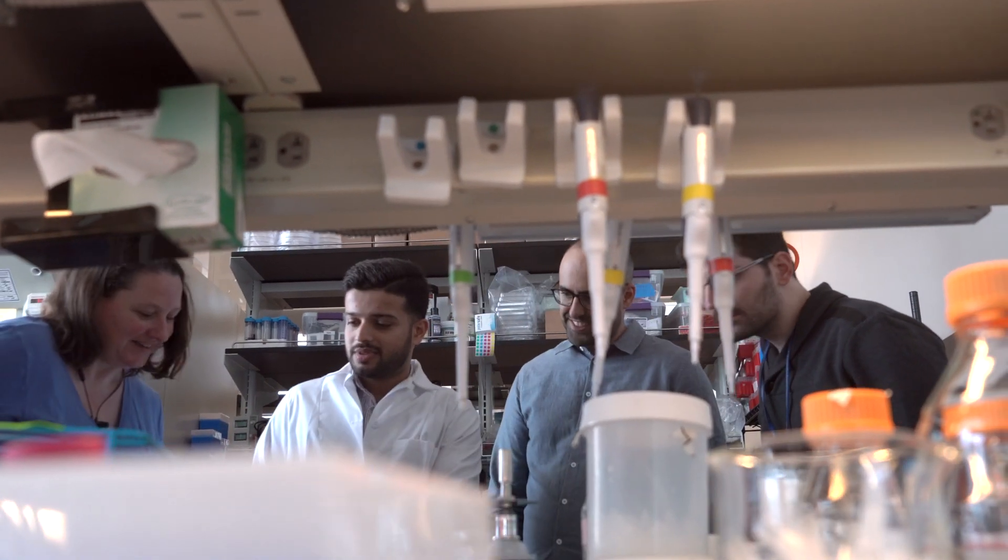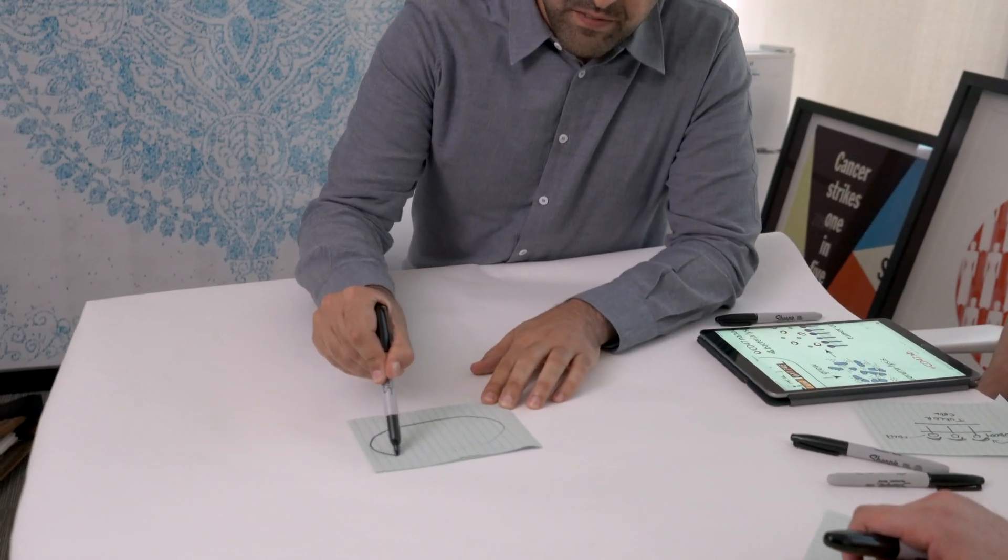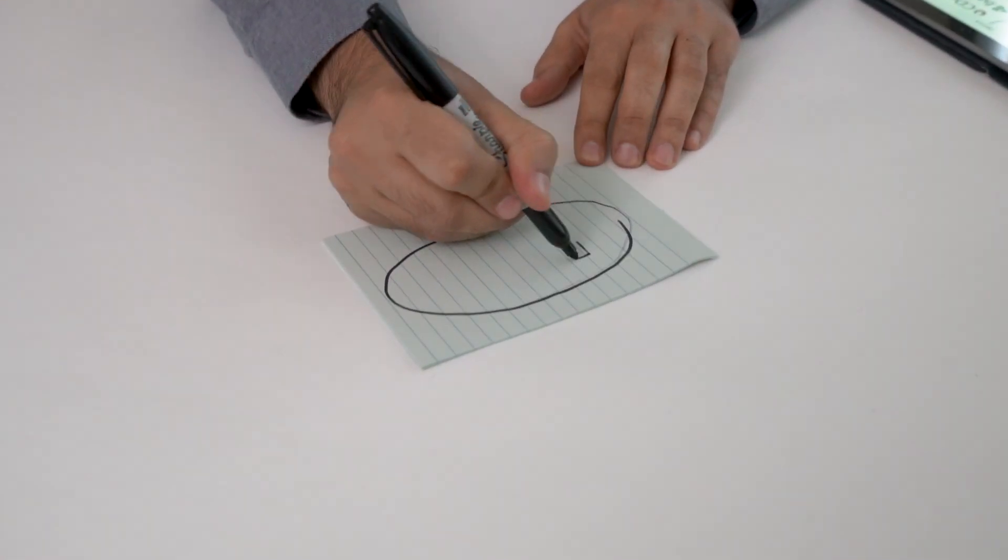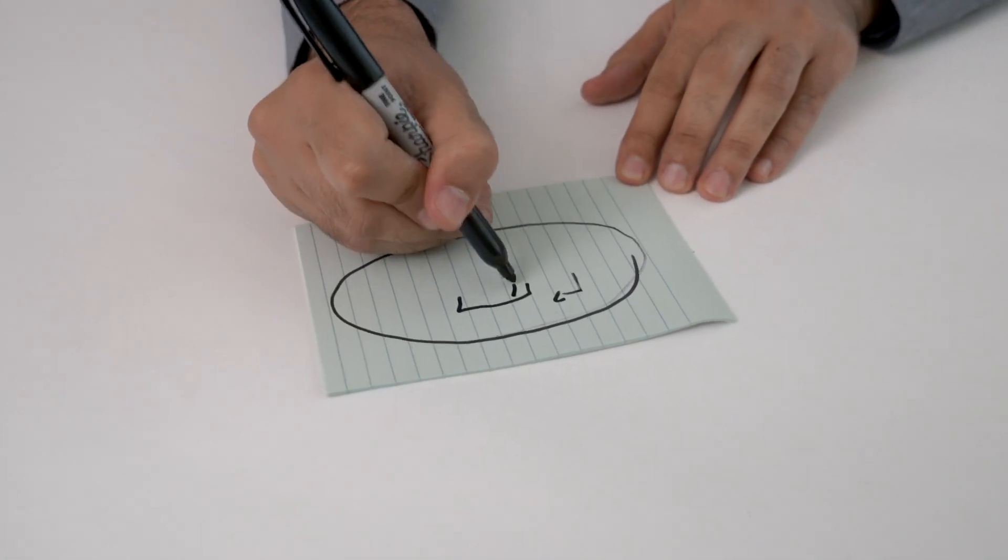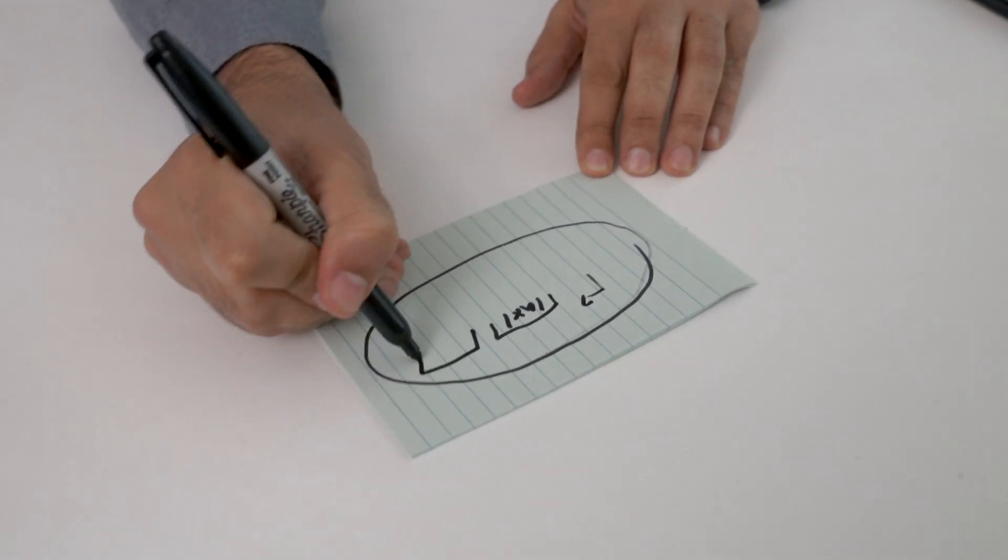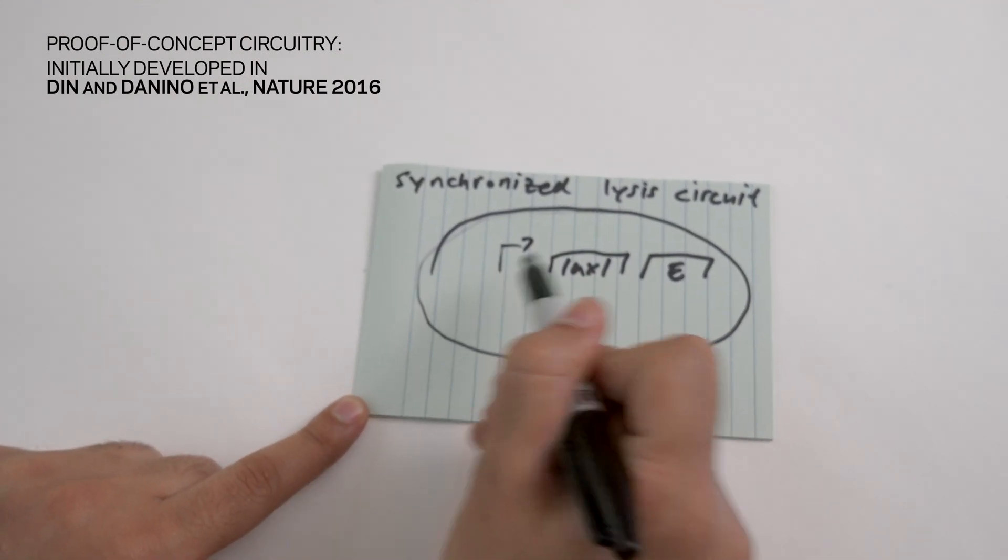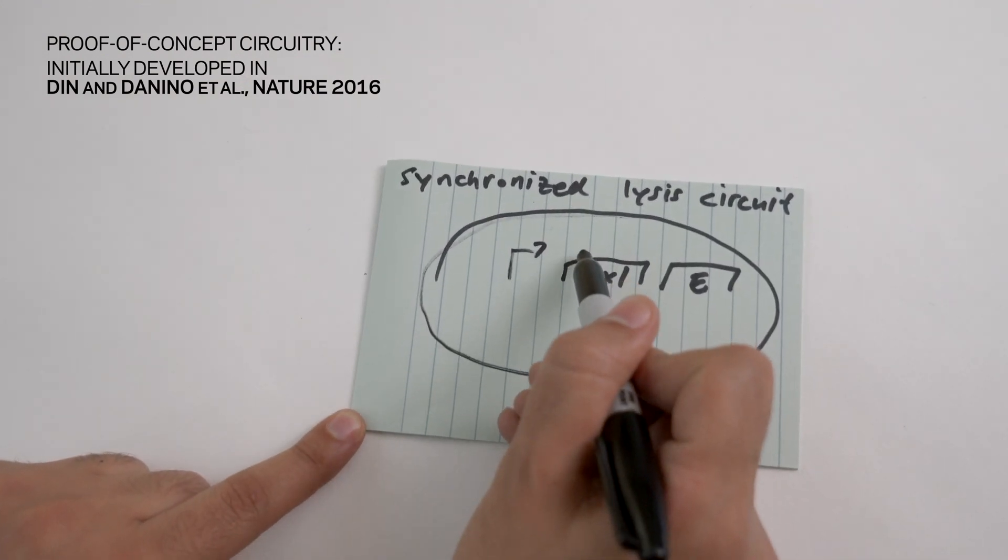The basic idea is you have a bacteria, and within this bacteria we have a genetic program that consists of different genes. This particular set of genes is what we call the synchronized lysis circuit, and essentially the circuit has two genes.